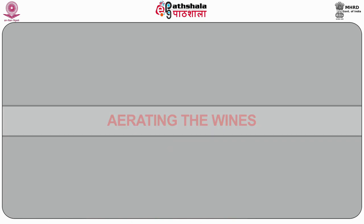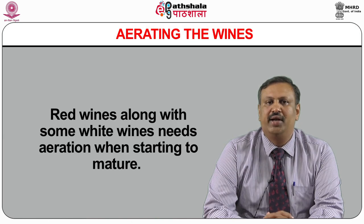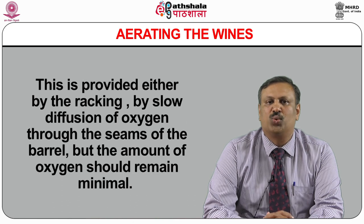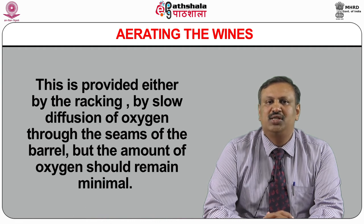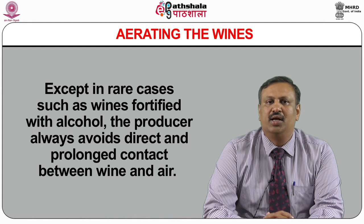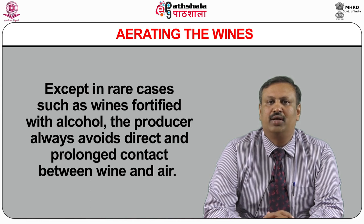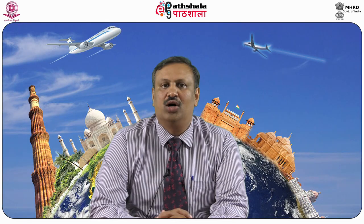Red wines along with some white wines need aeration when starting to mature. This is provided either by racking or by slow diffusion of oxygen through the seams of the barrel, but the amount of oxygen should remain minimal. Except in rare cases such as wines fortified with alcohol, producers always avoid direct and prolonged contact between wine and air. Oxygen promotes the growth of bacteria such as Acetobacter, which can turn the alcohol into vinegar, and also alters the colour and taste of wine; to avoid this, sulfur is added.